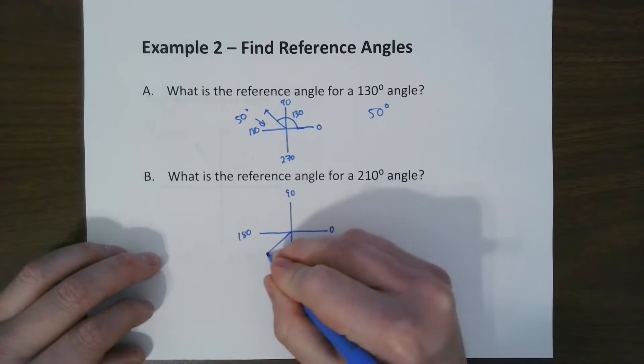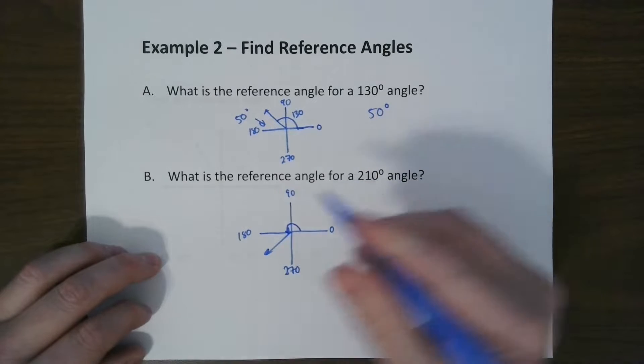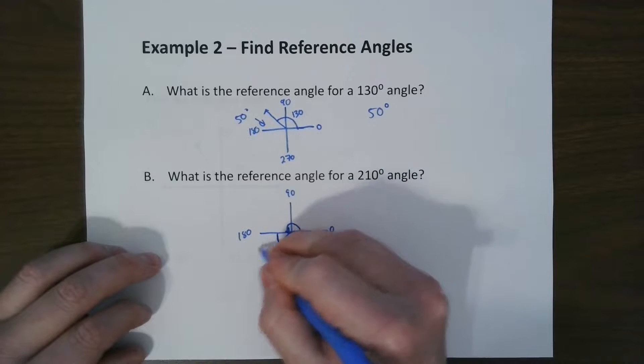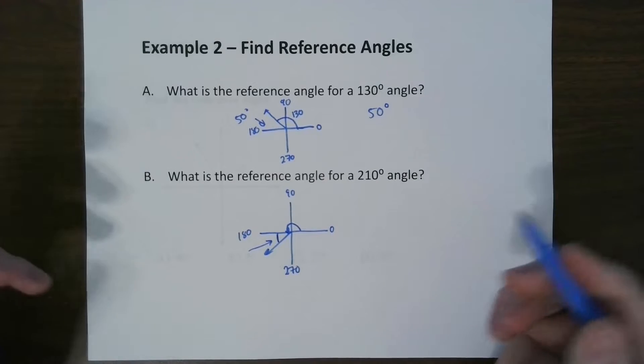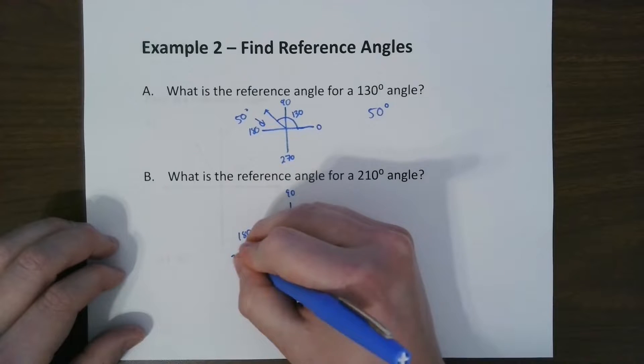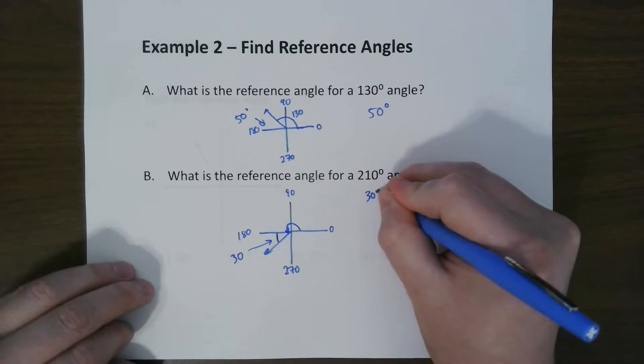Well, 210 is right between here and here. So this one goes all the way over here. Now the reference angle is this angle right here. So how far did we overshoot 180 to get 210? The answer is 30. So the answer is 30 degrees.